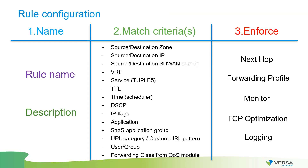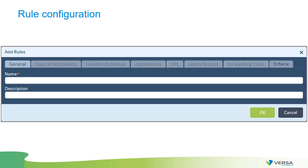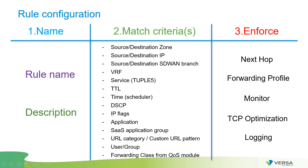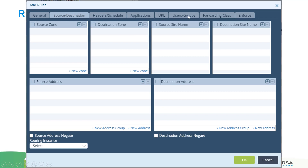Rule configuration inside policies is divided into three sections: name, match criteria, and enforcement. The rule section contains only the name and description. The match criteria section includes source/destination, headers, application URL, user groups, forwarding profiles, and more.